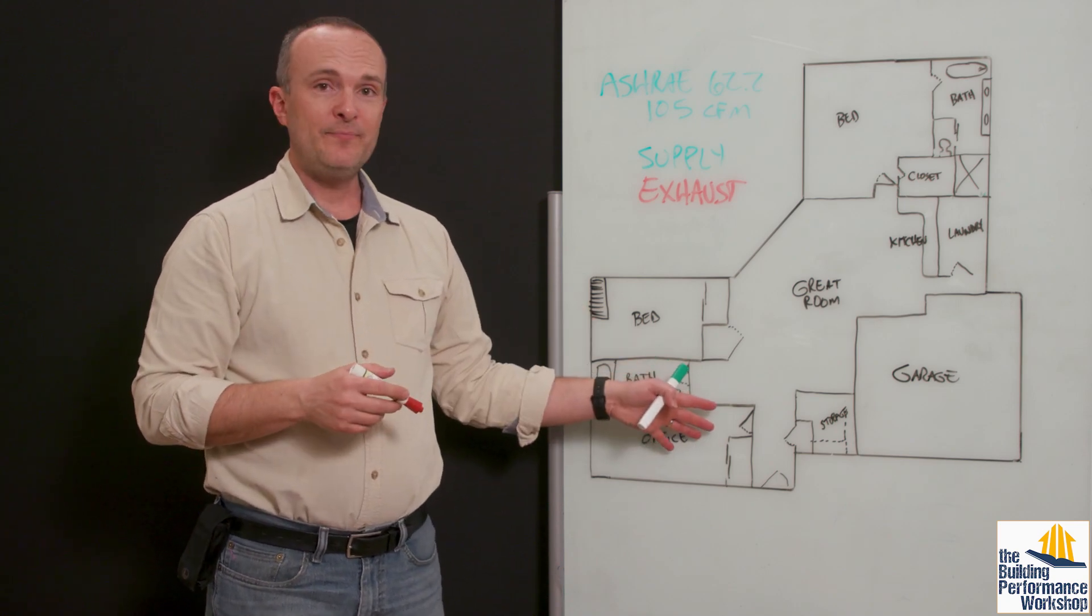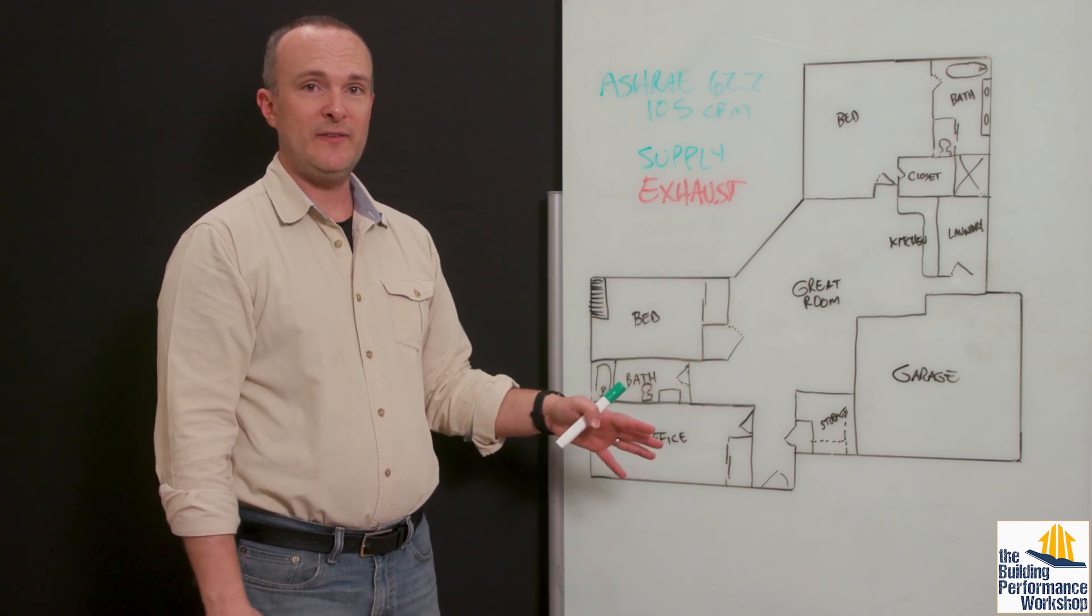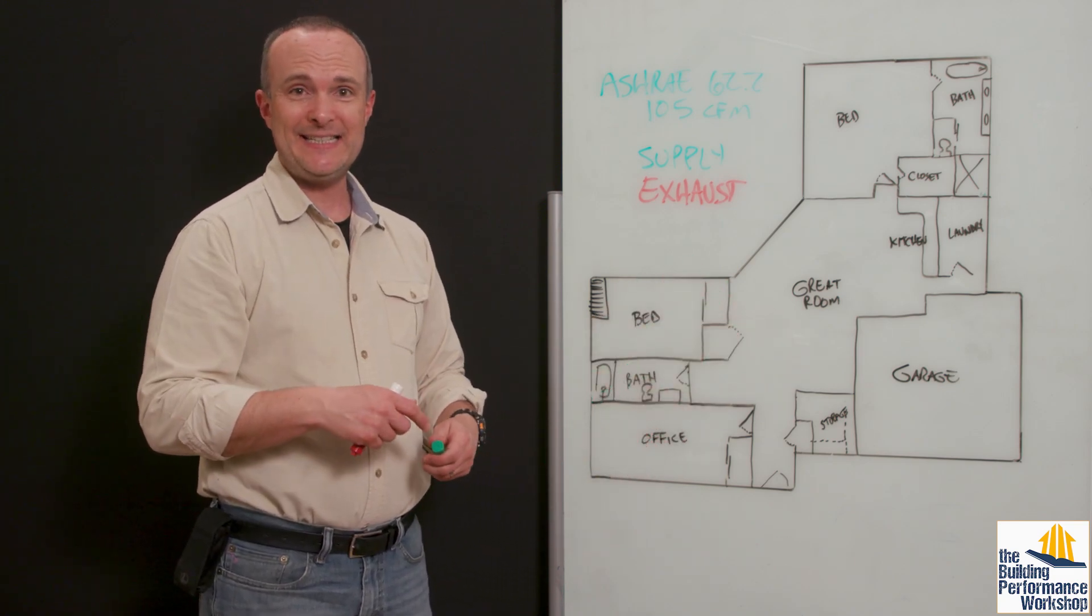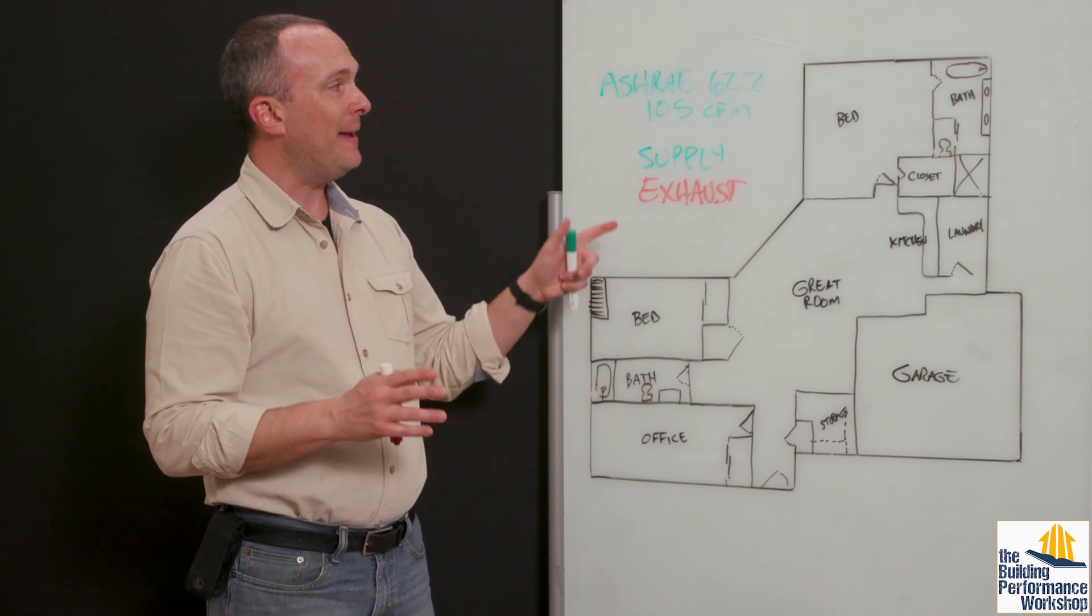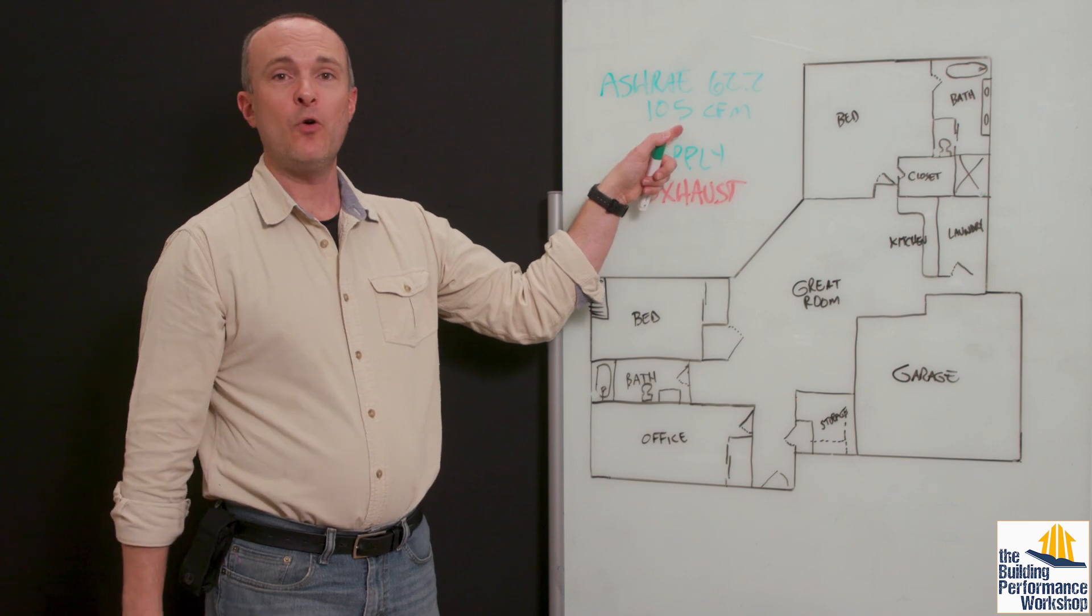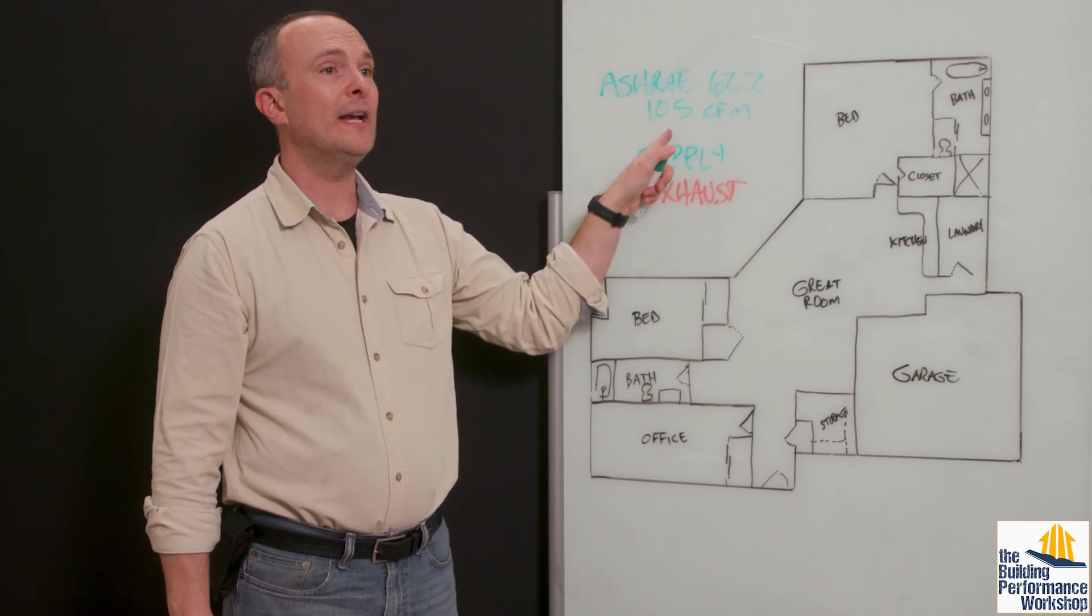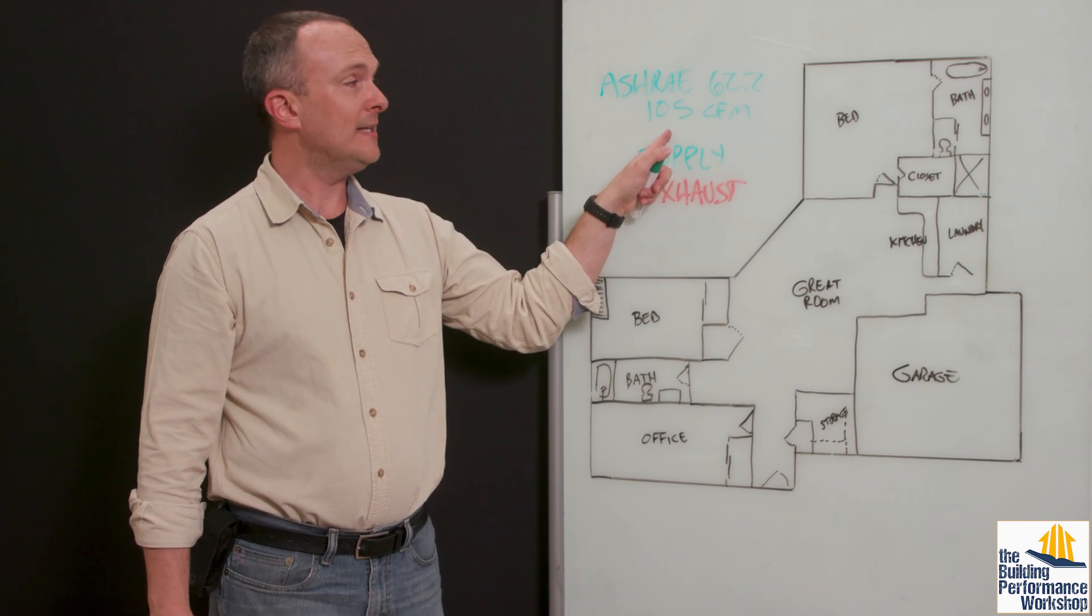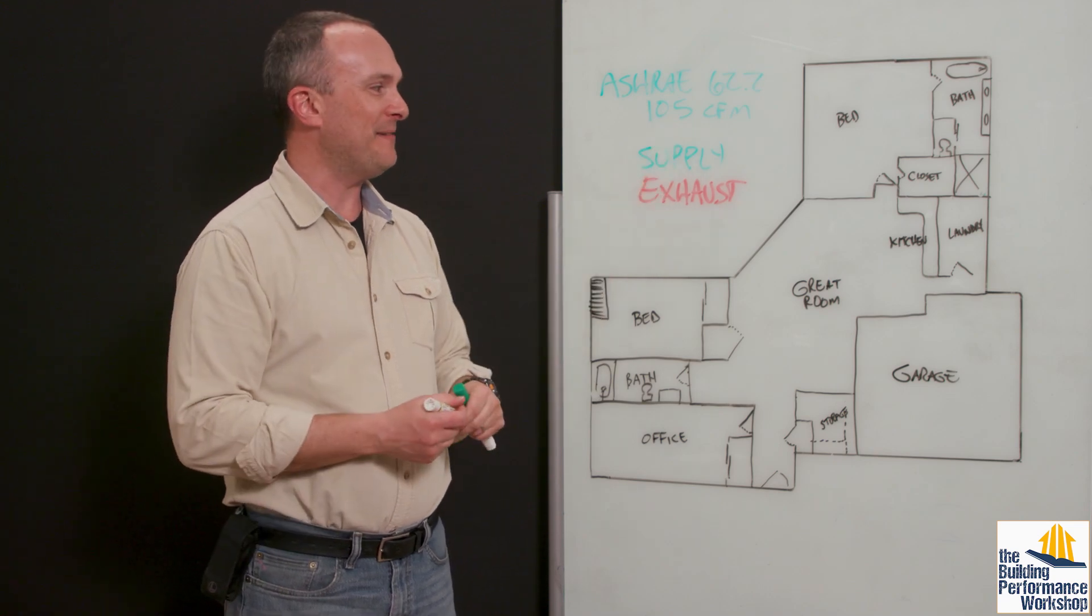Continuous. Every minute of every day, you're going to bring 105 cubic feet of air from outside into the house. Now, if this house is 3,000 square feet with 10-foot ceilings, that's 30,000 cubic feet. We divide that by 60 to get 500 cubic feet. That is how many cubic feet it would take to have one air change per hour. So 105 CFM would give me one air change every five hours instead. That's good.